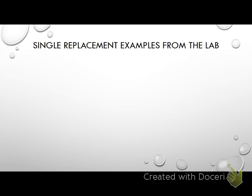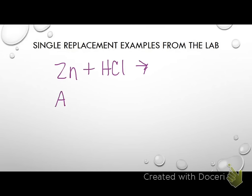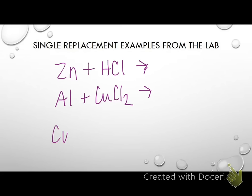The first single replacement was the demo where we put zinc in hydrochloric acid — zinc plus HCl. We know that reaction happened because we saw bubbles. You'll need to predict what that made. That's an element and a compound, so it's single replacement. We also added aluminum to the copper 2 chloride — that's where we put the aluminum foil in that blue stuff — and something happened. You need to predict that. We also did a single replacement that did not happen — a no reaction. We put the copper in the sodium chloride solution and nothing happened.